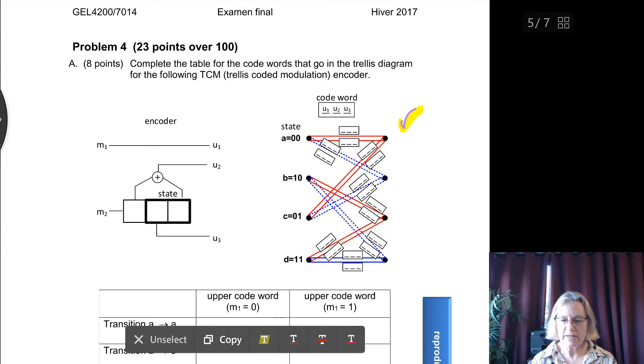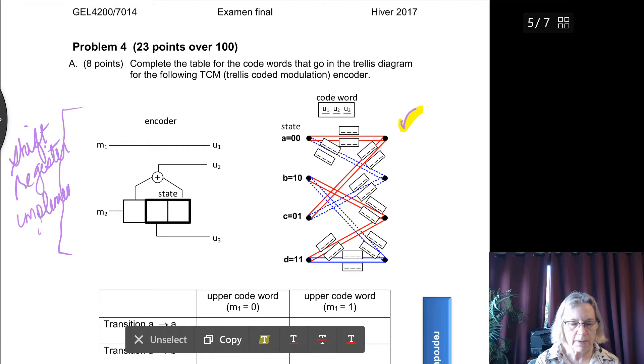Here's the trellis diagram and this is the shift register implementation of the code, the TCM code to be used. So based on looking at this shift register implementation, we're supposed to complete the code word, excuse me, the trellis.